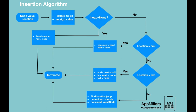In the previous video, we explained how to insert a new node into a linked list. We learned there are three ways: inserting at the beginning, at the end, and after a particular node. In this video, we will combine all three types of insertion into one algorithm. The algorithm starts by creating a method that takes two parameters: node value (the value to insert) and location (where to insert in the list).